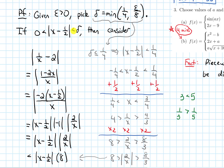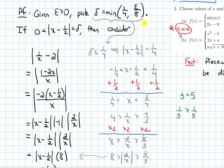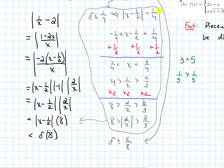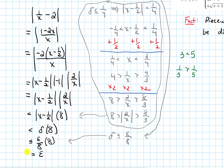Now delta ≤ epsilon/8, so delta · 8 ≤ (epsilon/8) · 8 = epsilon. The eights cancel and we get epsilon. So we've shown that |1/x − 2| < epsilon.